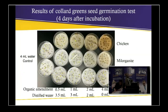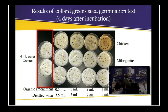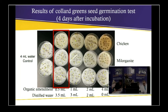Here are the results — you can also see them displayed outside. In the control, only water was added. On one side are different levels of organic amendment concentration. For each plate, 4 ml of water or different strengths of organic amendment were added, including different levels of chicken manure, Milorganite, and dairy manure. In water, almost all seeds germinated, and at low concentration, seeds germinated well regardless of whether it was chicken manure, Milorganite, or dairy.